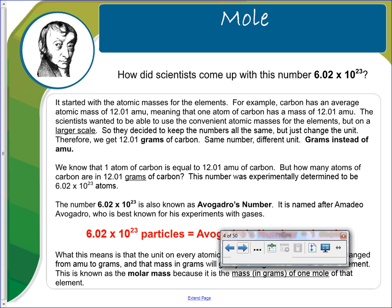So how did scientists come up with this number 6.02 times 10 to the 23rd? It started with the atomic masses for the elements. For example, carbon has an average atomic mass of 12.01 amu, that stands for atomic mass unit, meaning that one atom of carbon has a mass of 12.01 amu.